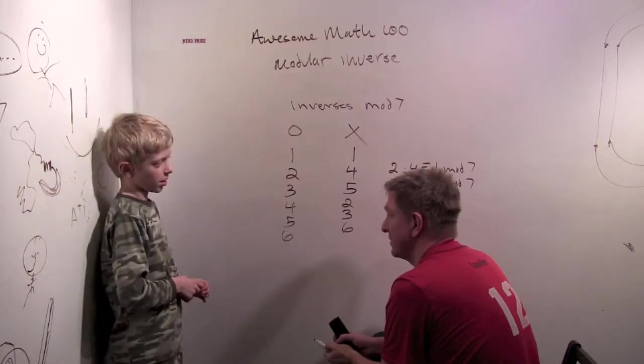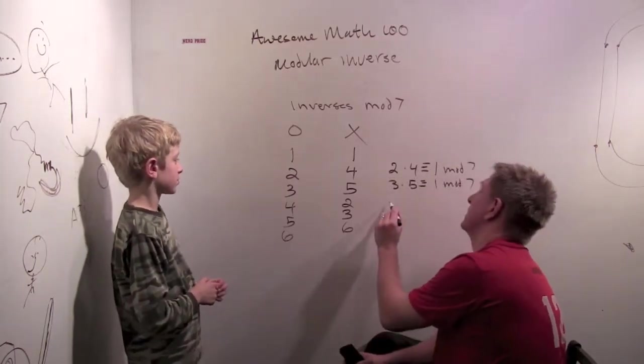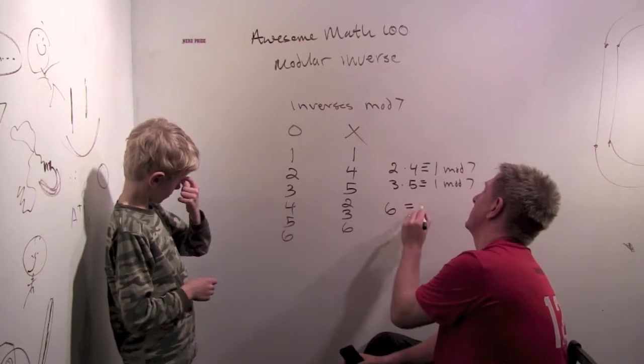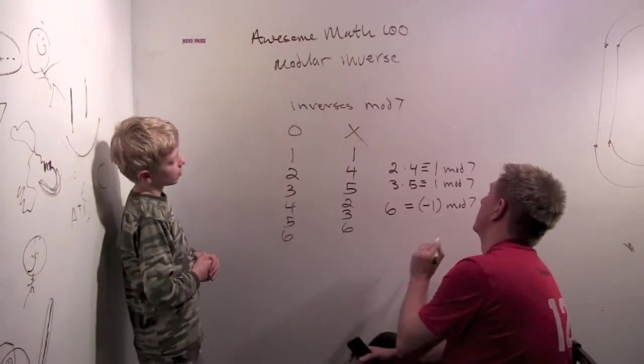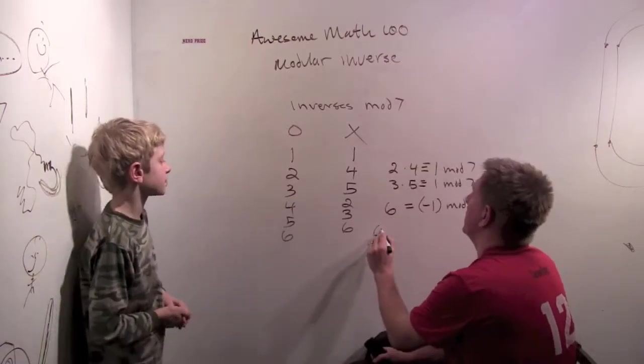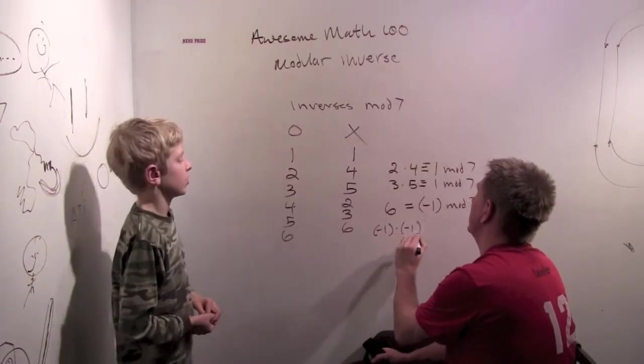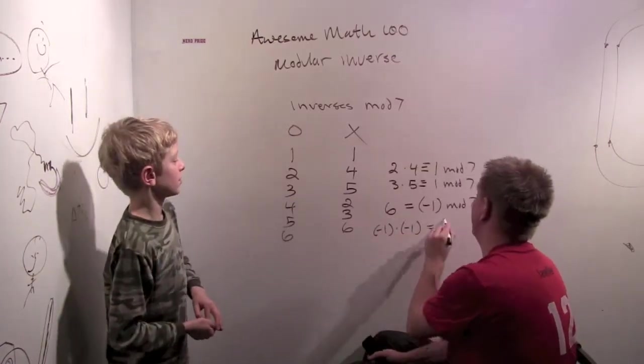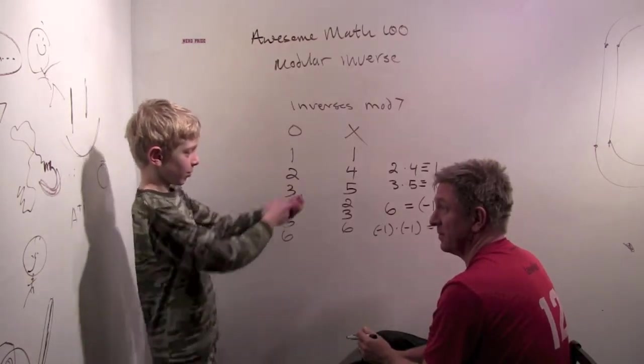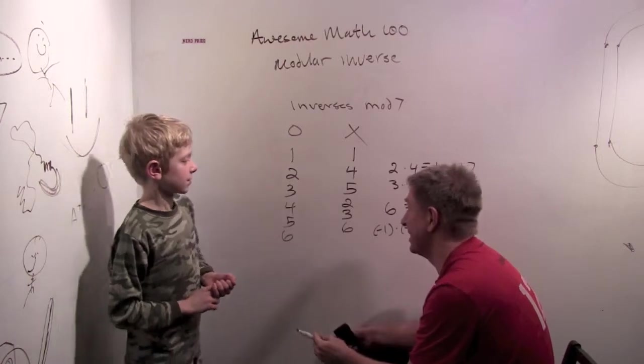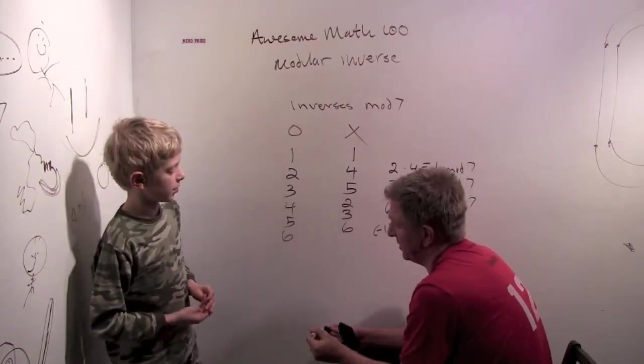I don't think I know why they match. Because six equals minus one mod seven. And minus one times minus one is one. So that means six times six would be one mod seven. The negative numbers are pretty interesting in modular arithmetic.